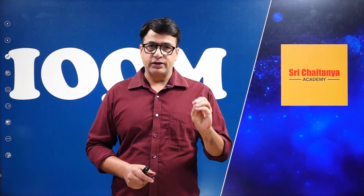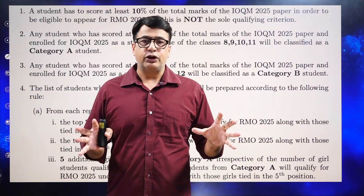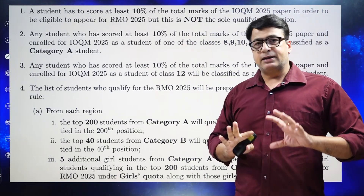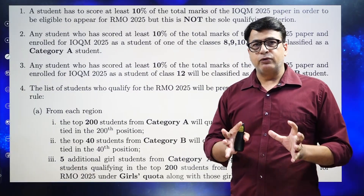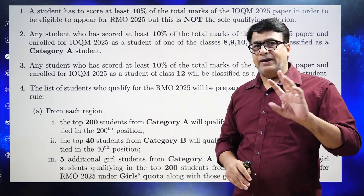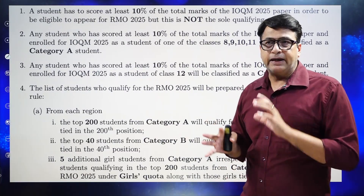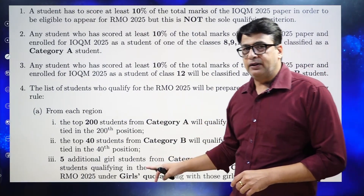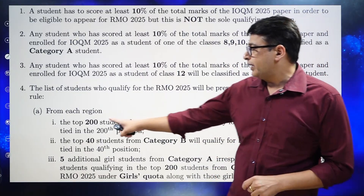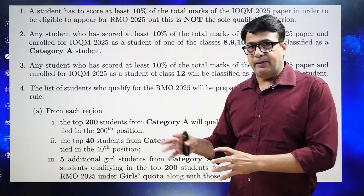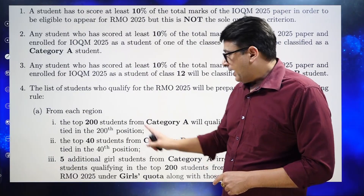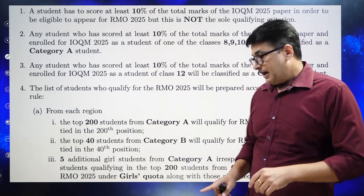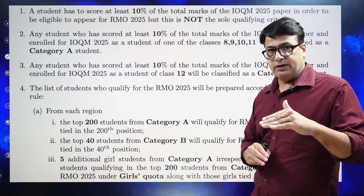Before we move forward, let's understand the overall exam pattern. Students who score at least 10% of the total marks in IOQM are selected — that is the minimum criteria, though ranks also matter. Students are classified into two categories: Category A (classes 8 to 11) and Category B (class 12). In Category A, 200 students are selected from each region, and 40 students from Category B. Additionally, 5 extra girl students are selected in Category A beyond the 200.